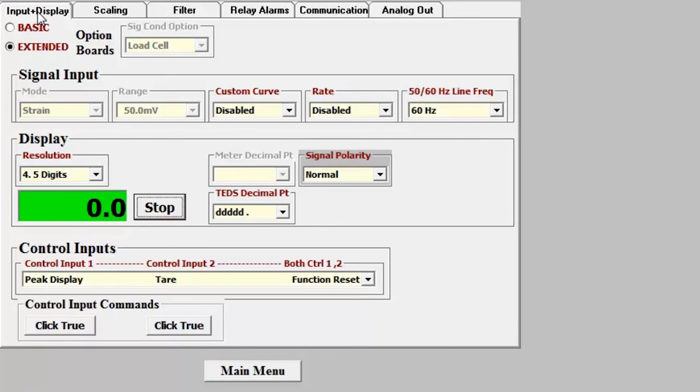You can see you have 6 setup tabs for programming: input and display, scaling, filter, relay alarms, communication, and analog output.